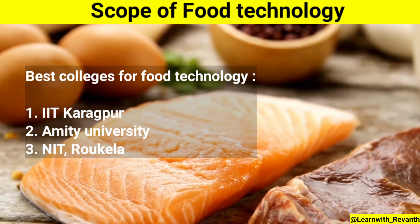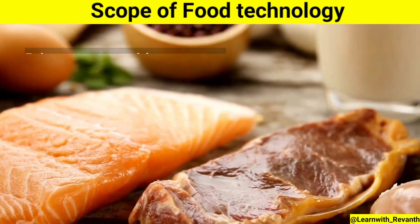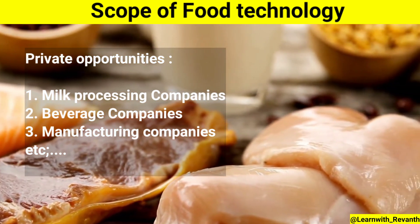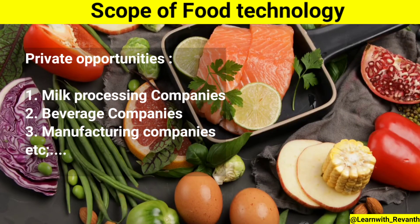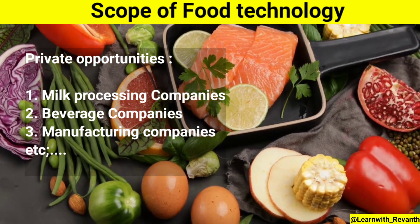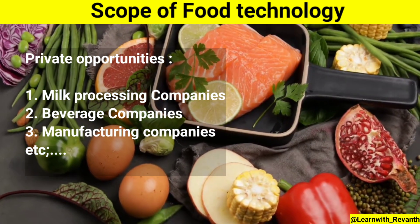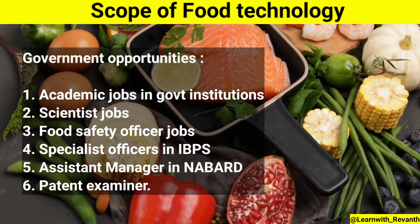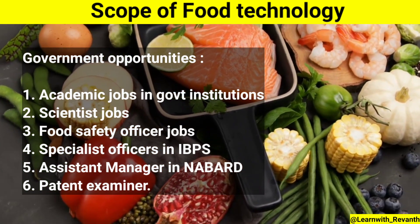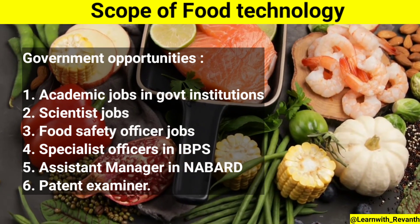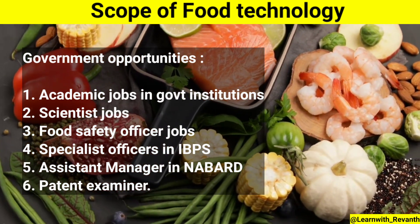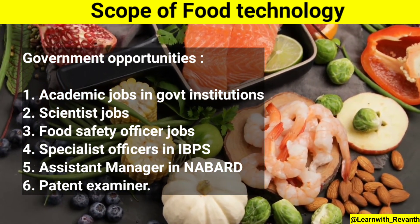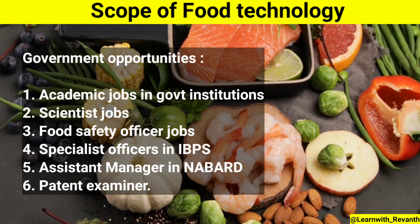For job options in the government and private sector: private sector includes milk processing companies, beverage companies, and instant food manufacturing companies — tea, farm, and oil sectors. Government options include academic jobs in government institutions, scientific jobs, food safety officers, specialist officers in IBPS, and assistant manager roles in NABARD.